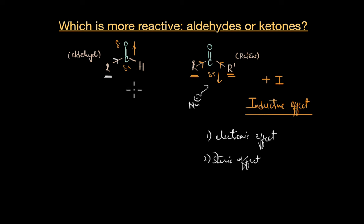So the steric effect here basically talks about how easy it is for a nucleophile to approach the electrophilic carbon center. Now here again, when you look at aldehydes and ketones and their structures, you can see that ketones have two bulky alkyl groups which make it difficult for the incoming nucleophile to approach the electrophilic carbon center.